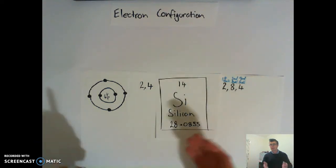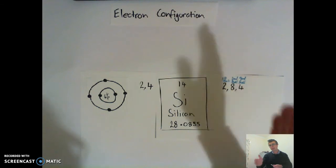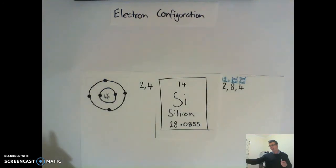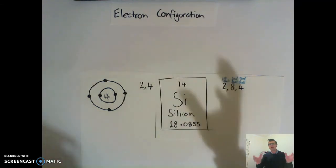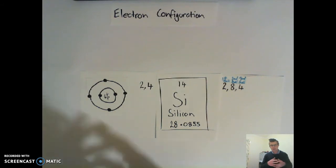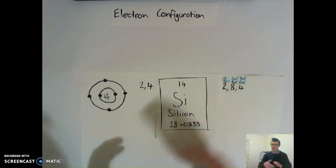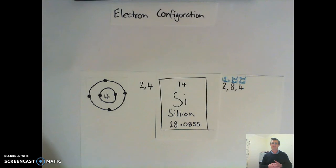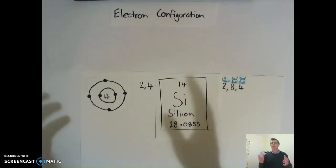Period three means three electron shells, period two means two electron shells. So silicon must live in the third period. But what group does it live in? The secret to that is in the last number. Our outer shell is our valent shell, and remembering that anything that has four electrons in its valent shell must live in group four.